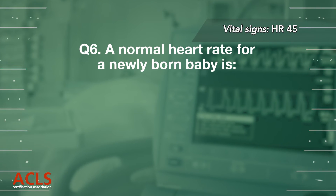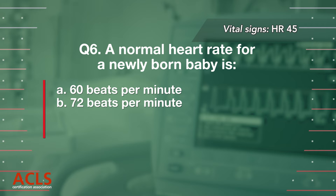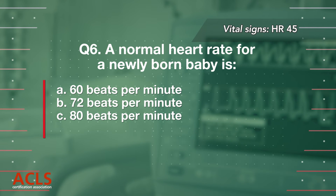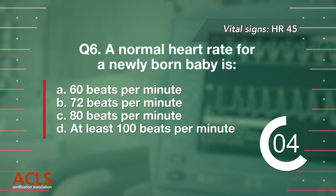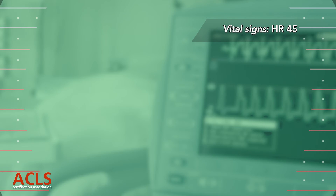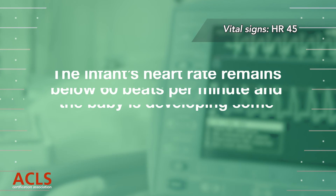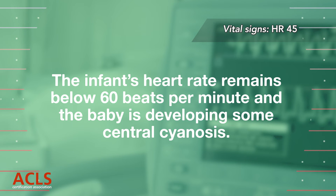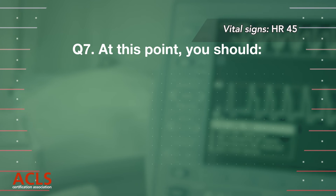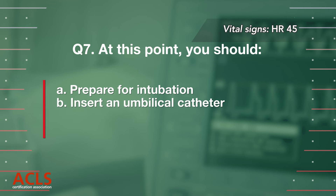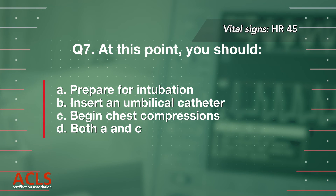Question 6: A normal heart rate for a newborn baby is: A. 60 beats per minute, B. 72 beats per minute, C. 80 beats per minute, D. At least 100 beats per minute. Correct answer: D. At least 100 beats per minute. The infant's heart rate remains below 60 beats per minute and is developing some central cyanosis. Question 7: At this point, you should: A. Prepare for intubation, B. Insert an umbilical catheter, C. Begin chest compressions, D. Both A and C.